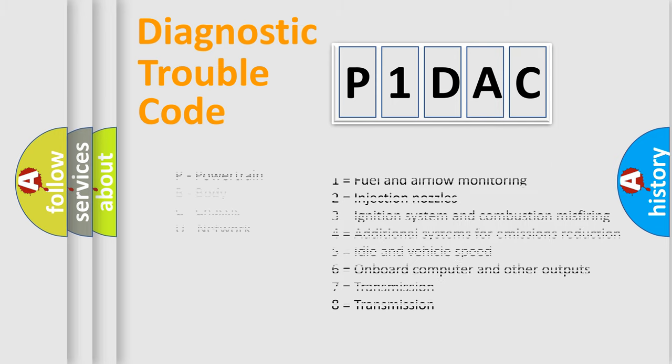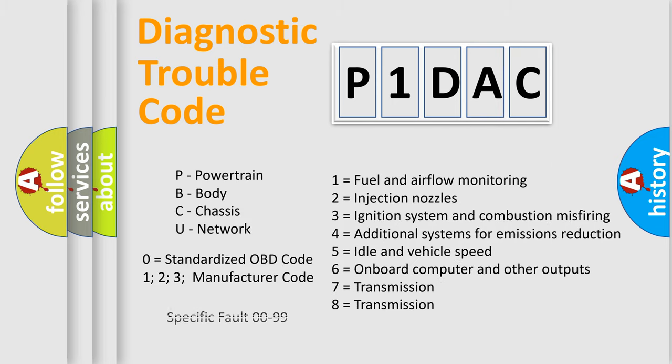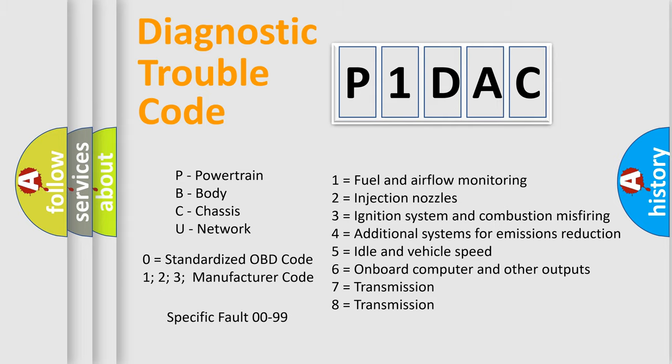Only the last two characters define the specific fault of the group. This division is valid only if the second character code is expressed by the number zero.